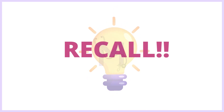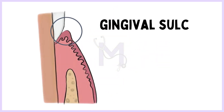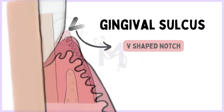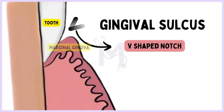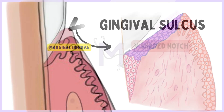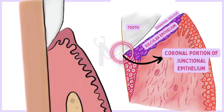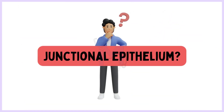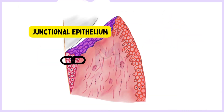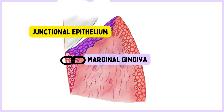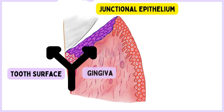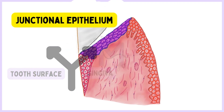Let us now recall a few basic terms. Do you remember the gingival sulcus? It is the V-shaped space between the tooth and the marginal gingiva. It is bordered by the sulcular epithelium on one end, the tooth on the opposite side and the coronal end of the junctional epithelium at its most apical end. The junctional epithelium is that part of the gingival epithelium that attaches the marginal gingiva to the tooth surface, forming a junction between the tooth and the gingiva. Hence, it is called the junctional epithelium.